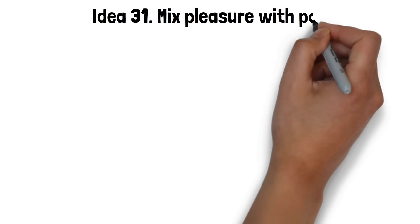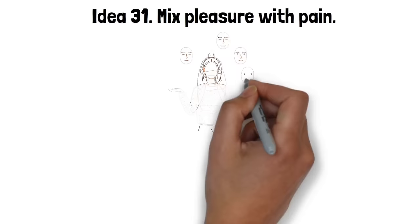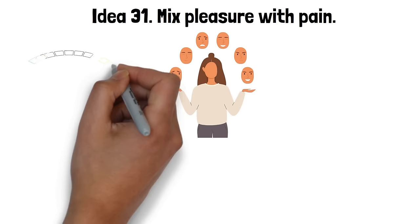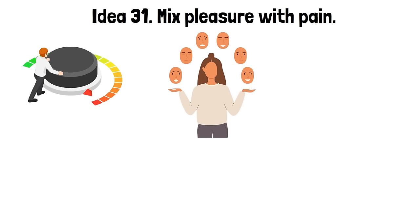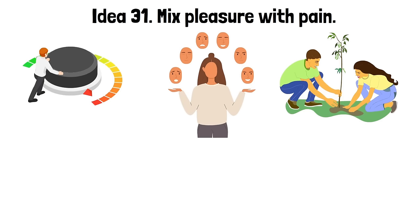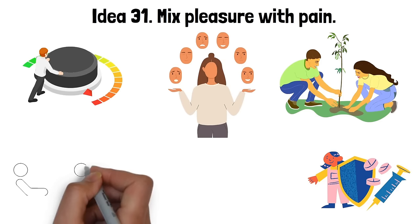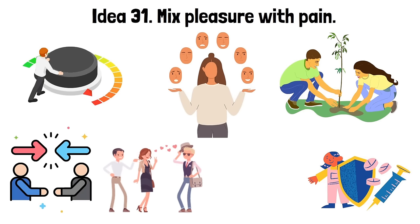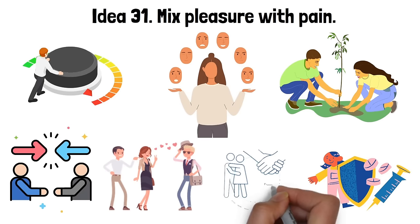Idea 31. Mix pleasure with pain. The notion of mixing pleasure with pain speaks to the complex nature of human emotions. In the context of seduction, it's about creating a balance of highs and lows to intensify feelings. Pleasure alone can lead to complacency, whereas when coupled with a dash of pain or anxiety, it can heighten anticipation and desire. This strategy isn't about causing harm, but introducing subtle elements of uncertainty or challenge to stimulate the other person's interest. It could be as simple as stirring mild jealousy or delaying gratification, all to magnify the pleasure when it's finally obtained. It's a dance of push and pull that keeps the seduction exciting, unpredictable and emotionally engaging.